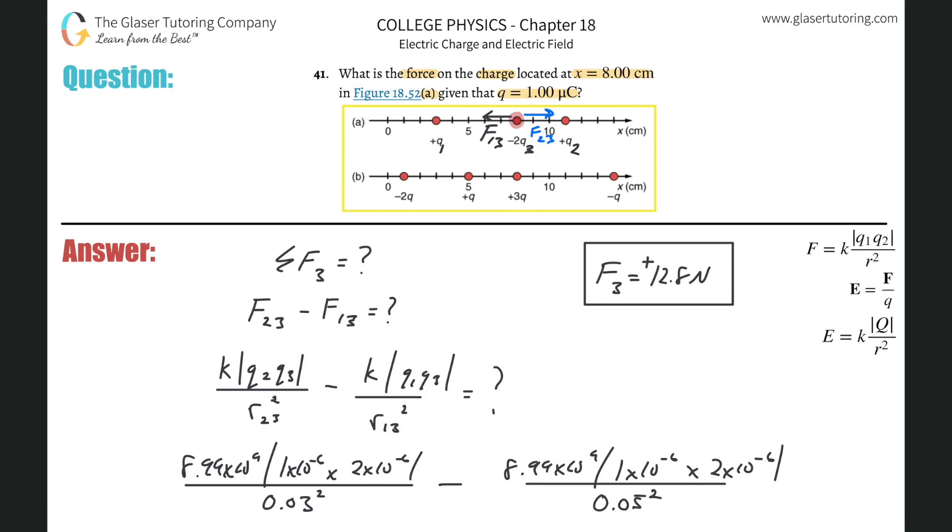And that kind of makes, that should hopefully make sense. These two are equal in magnitude, but the charge here is closer to Q2 than it was to Q1, and therefore Q2 should be pulling harder on it.